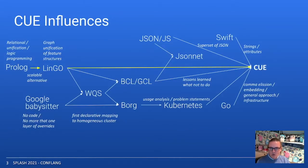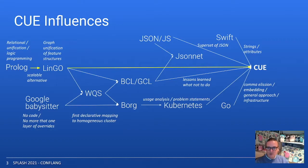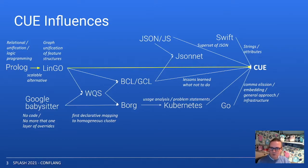A bit more on how CUE came about. CUE is directly influenced by Lingo, which I used at my previous company. Lingo is a logic programming system based on graph unification of typed feature structures. It was designed as a reaction to Prolog, to take a more declarative approach and address some of the challenges of engineering large-scale grammars. The beauty of this declarative approach really shaped my thinking for configuration-related projects I worked on at Google later on.